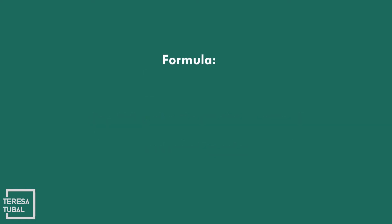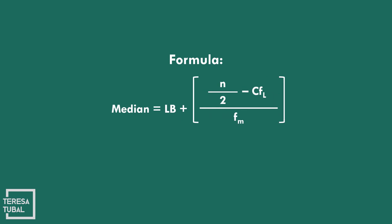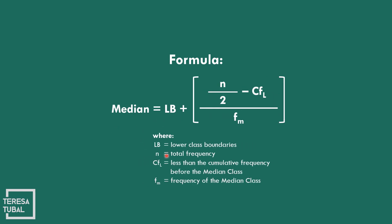So what could be the formula for the median of grouped data? Median is equal to LB — LB stands for the lower class boundary — plus the quantity N over 2, where N is the total frequency, minus CF sub L, that is the less-than cumulative frequency before the median class, all over F sub M, which refers to the frequency of the median class, times the interval.